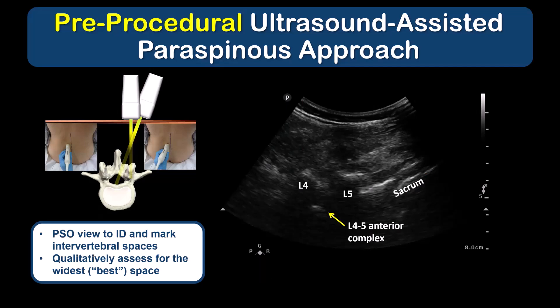This is the approach that I would personally use in difficult patients. I follow a standard ultrasound scanning protocol, which is to start with a parasagittal oblique, or PSO, view. I identify the various intervertebral levels and mark their position on the skin, and at the same time I also assess the size of the pyramidal interlaminar spaces.